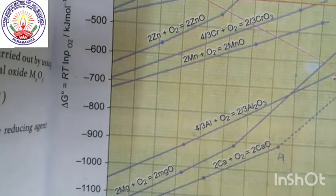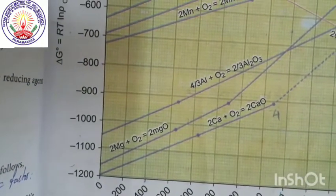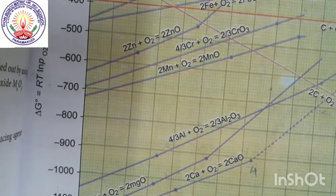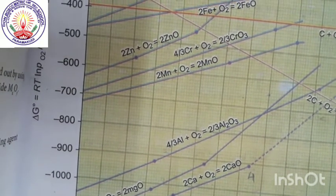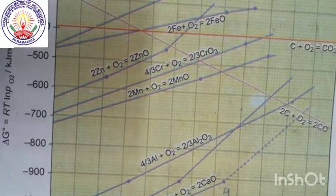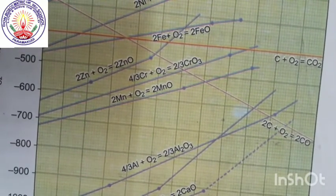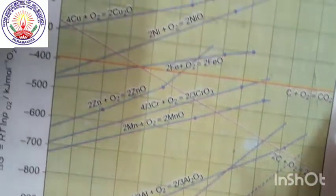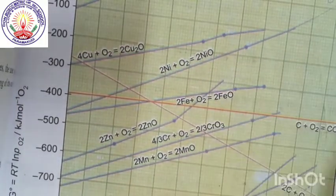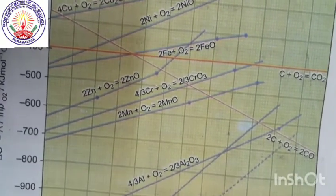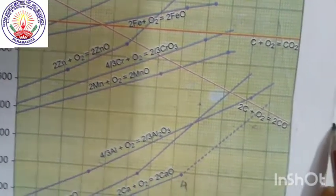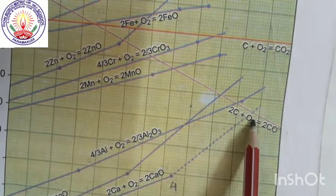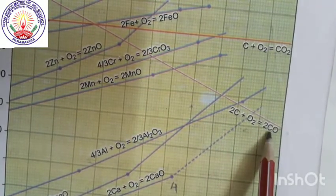This is the Ellingham's diagram. Mostly, all lines are having a positive slope — that is, they go upward with increasing temperature. Every metal oxide is going upward, except one — that is carbon. Carbon is having a negative slope, meaning it goes downward as temperature increases.